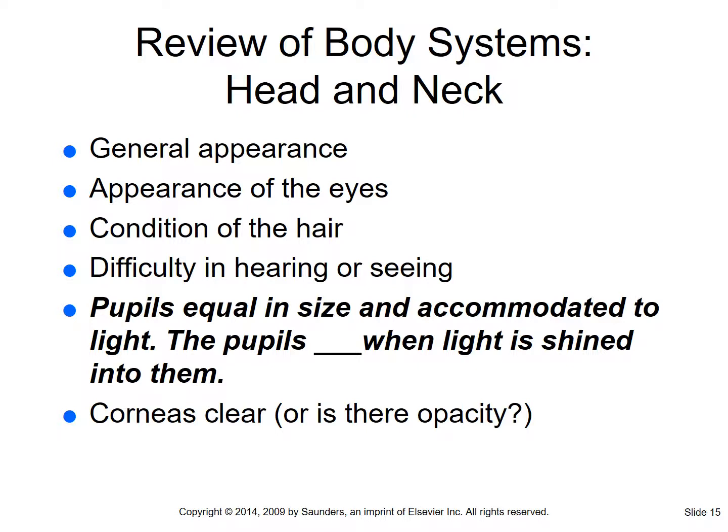We look at the speed of constriction - is it brisk or sluggish? You'll most likely see brisk in your classmates. A sluggish pupil will either delay and then constrict, or constrict very slowly. The reason constriction happens: when you walk into a bright room and it hurts your eyes, your pupils were open letting more light in - they constrict to reduce that light. When it's dark, the pupils dilate and get bigger to let more light in so you can see better.